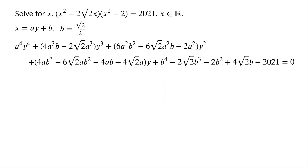That is to say, by the substitution x = ay + √2/2, the original equation is converted to one without y and y³ terms — it is a quadratic equation in y². Since a can take any non-zero value, we choose a = 1. Then x = y + √2/2. Now we can work out the coefficient of y² and the constant term.